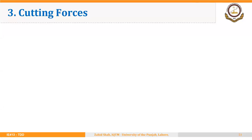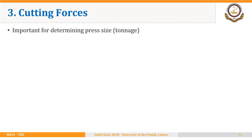The third important factor in sheet metal cutting operations is cutting forces required to perform a cutting operation. This is important because we have to determine the press size or the tonnage of the press that will be used to perform that operation.